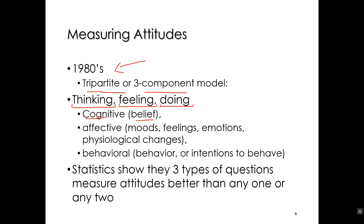The feeling component is called the affective component — moods, emotions, feelings, physiological changes are all part of it. And then finally the behavioral component — that is behavior, past behavior, or intentions to behave, or predictions about future behavior. Remember, it's the ABC model: A, B, C. And statistics show that the three types of questions measure attitudes better than any one or two types.